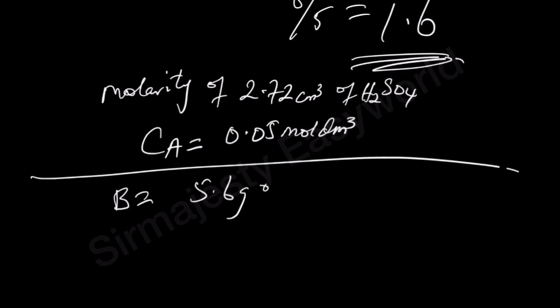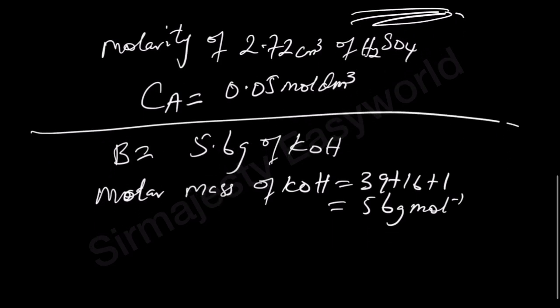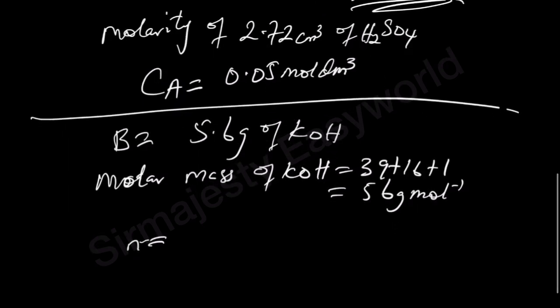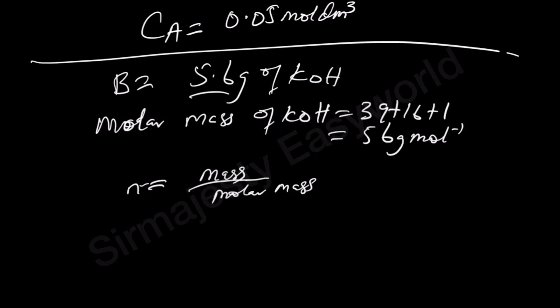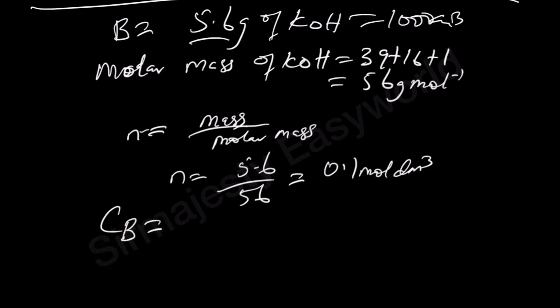Then let's go to B. 5.6 grams of KOH. First of all we have to find the molar mass, let's know the molarity but we need to know the molar mass of KOH. K is 39, oxygen is 16, hydrogen is 1, so that we have 56 grams per mole. That's the molar mass of KOH. Therefore how do you convert to mole? Number of moles is equal to mass over molar mass. Then the mass given was 5.6, so molar mass is 56, so that number of moles is exactly 5.6 all over 56 which will give you 0.1. So 0.1 mole per dm³. So we have gotten the molarity of both. So our CB, concentration of B base, is 0.1 mole per dm³.